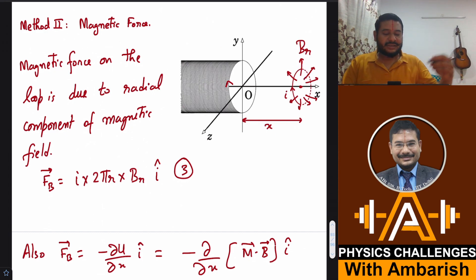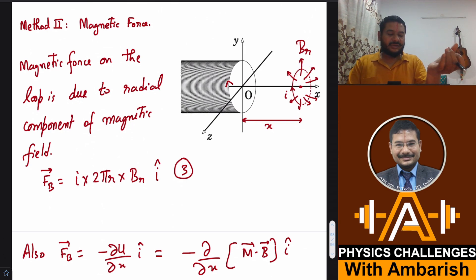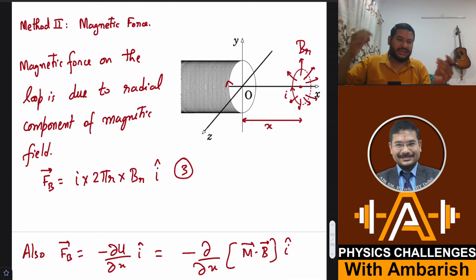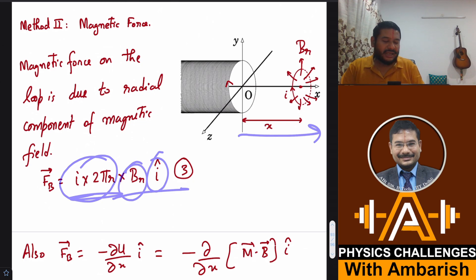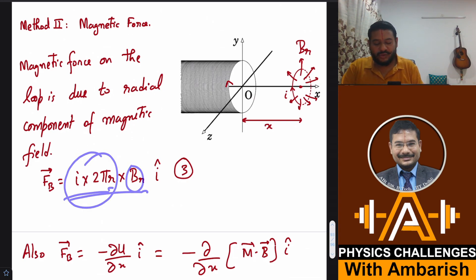B_radial is upward at a given element, and the current element dL is tangential, so dL×B points outward axially — causing an axial force on this loop due to the radial component. The axial component of field causes a radial force on the loop which cancels out around the ring. So only the radial field gives a net axial force: F = I·2πr·B_radial, in the x-direction.